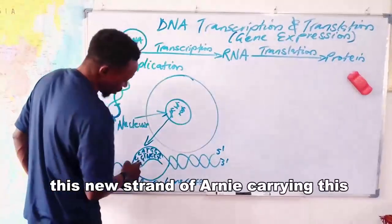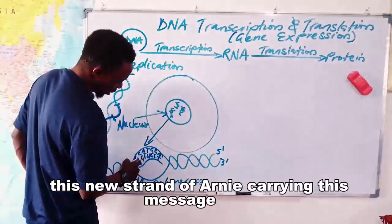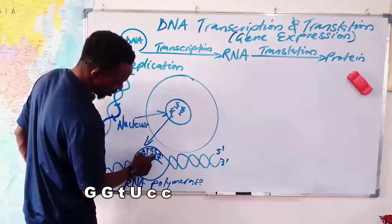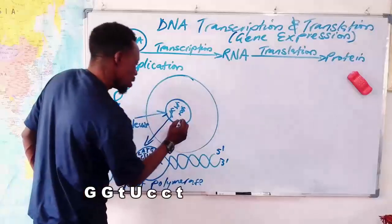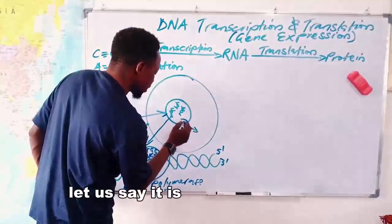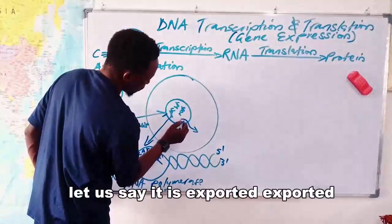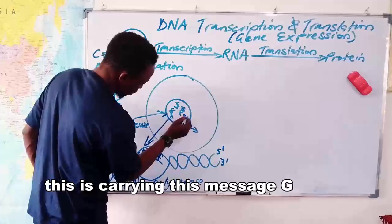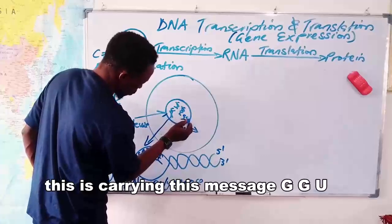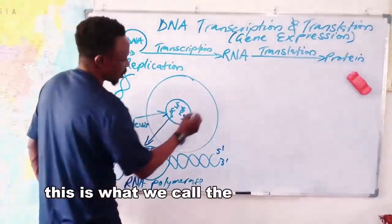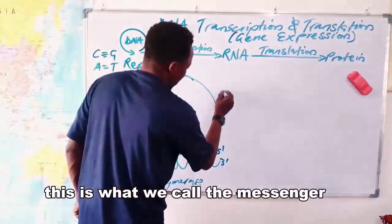This now becomes your new strand of RNA carrying the message — for example, G, G, U, C, C, T. This new strand of RNA gets exported out of the nucleus carrying this message. This is what we call the messenger RNA.